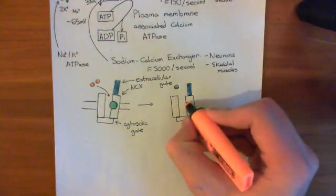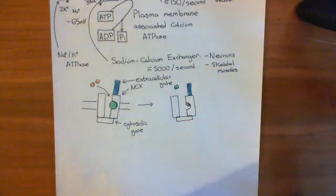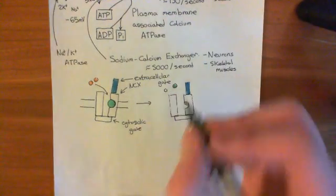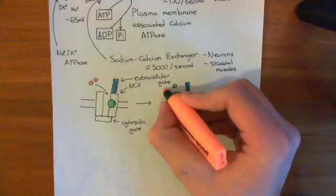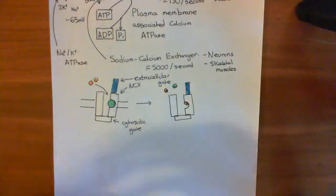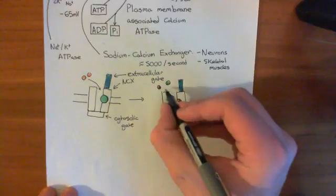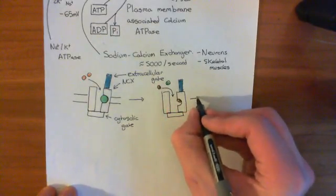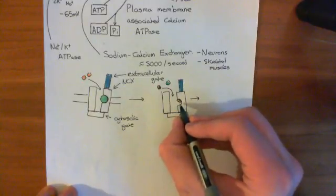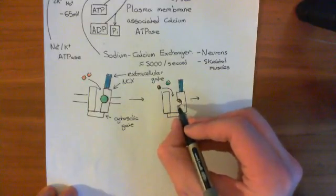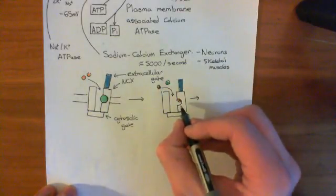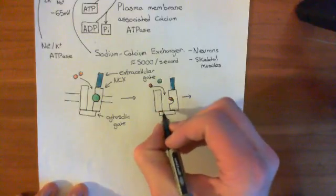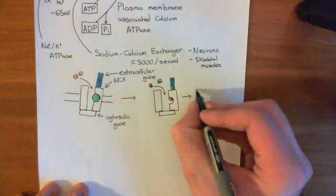Now another sodium ion is going to come in — the final, third sodium ion. We've got two already bound, and here comes the third, coming into the pore through the open extracellular gate, binding to the binding site. When it binds, it's going to trigger the closing of the extracellular gate and then the opening of the cytosolic gate.